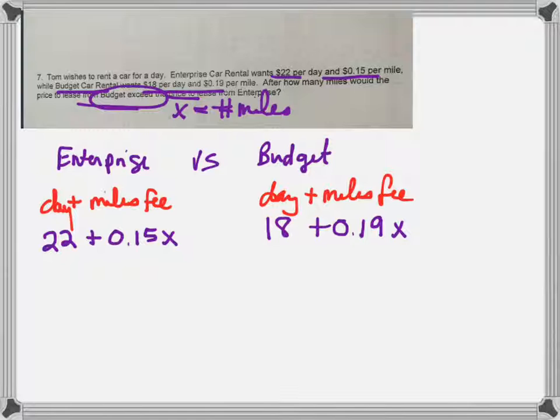Now I have to put some sort of either equal sign or inequality in between these two statements. And it says that they want Budget to exceed Enterprise. So that means Budget needs to be greater than Enterprise, or Enterprise needs to be less than Budget. So I put the inequality less than in there.